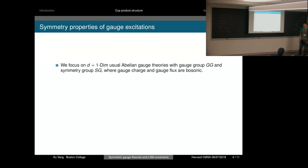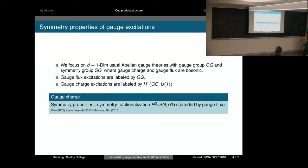During our talk, we will focus on d+1 dimensional Abelian gauge theories with gauge group GG and symmetry group SG, where gauge charge and gauge flux are both bosonic. The symmetry properties of gauge charge is well-known symmetry fractionalization. By acting on the gauge charge, we can pick up a phase which can be interpreted as braiding with the gauge flux.